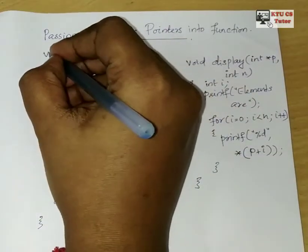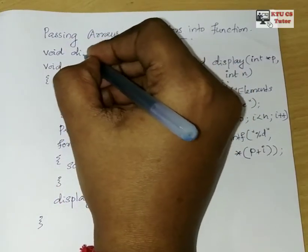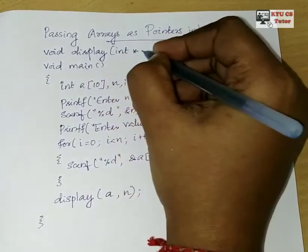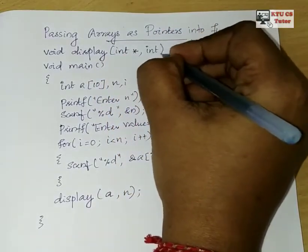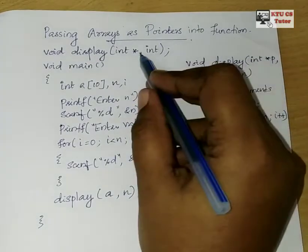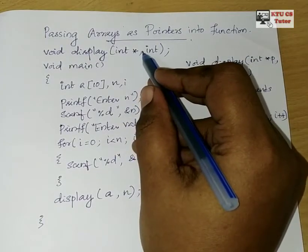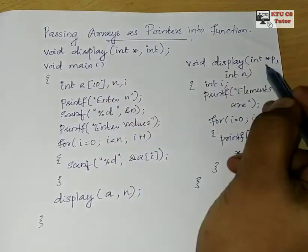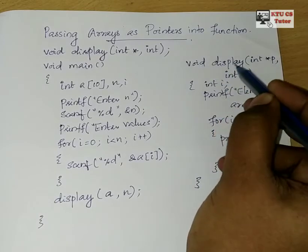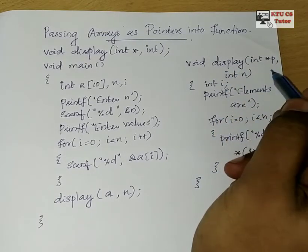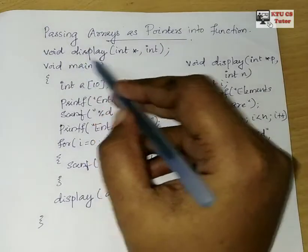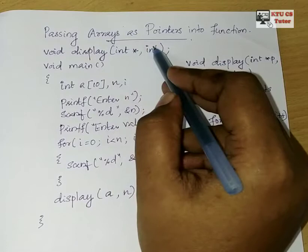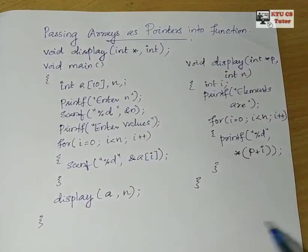For the function prototype above main, we write: void display, int star, int — without variable names in the prototype, just the data types. Then we also add the header file inclusion at the top of the program.